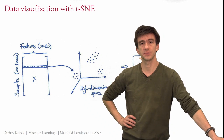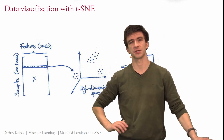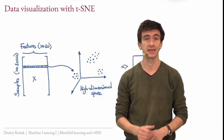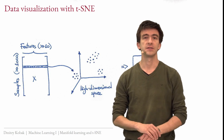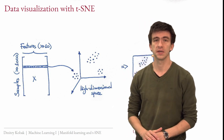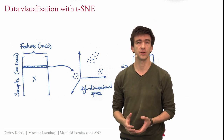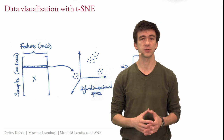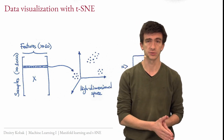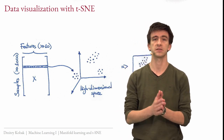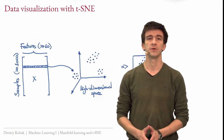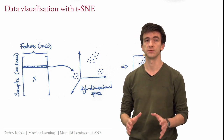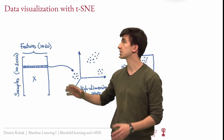Hello and welcome to the final lecture of this Introduction to Machine Learning course, lecture 11. Today we continue talking about unsupervised learning, dimensionality reduction and data visualization. We started last time with principal component analysis, and today we will talk about a method called T-SNE and related methods.